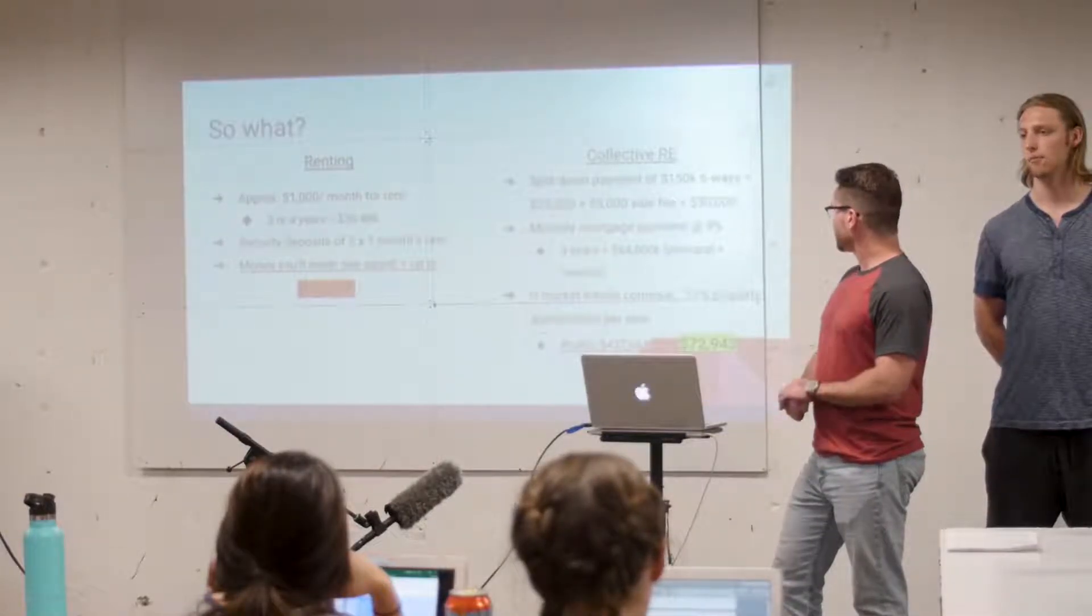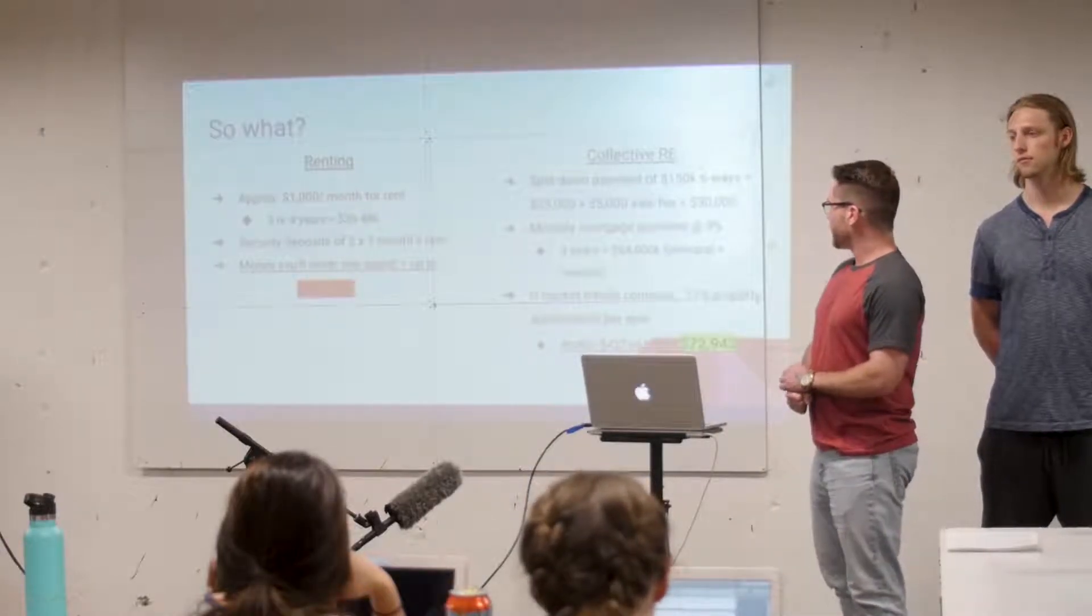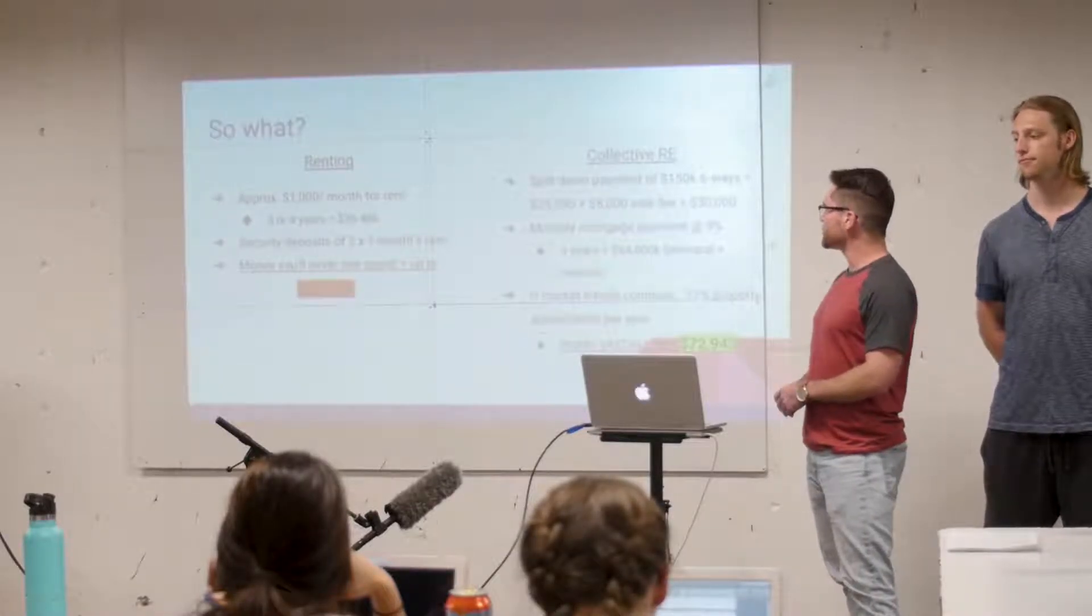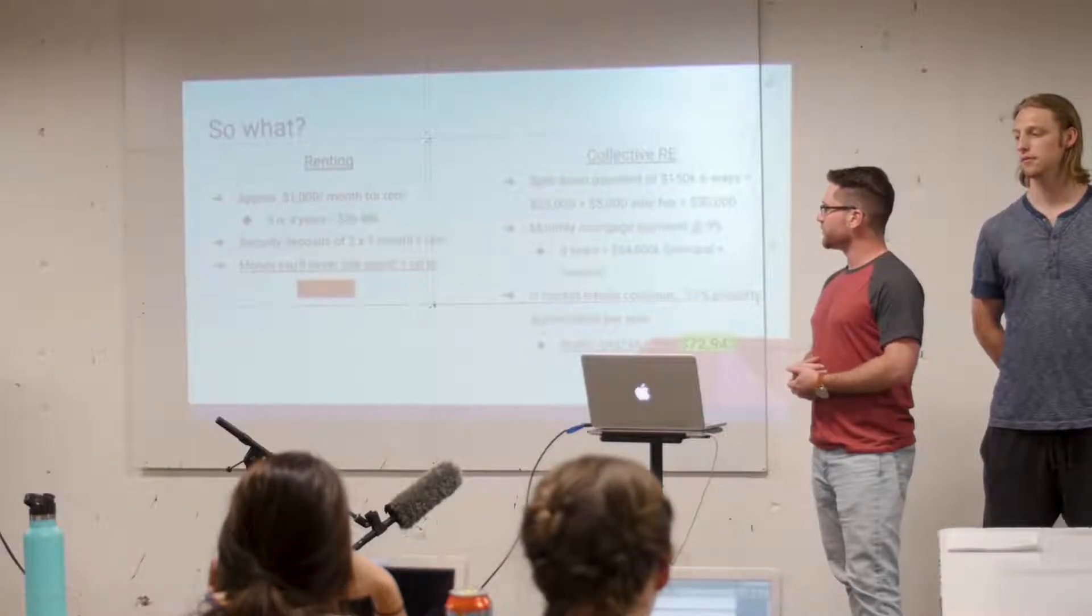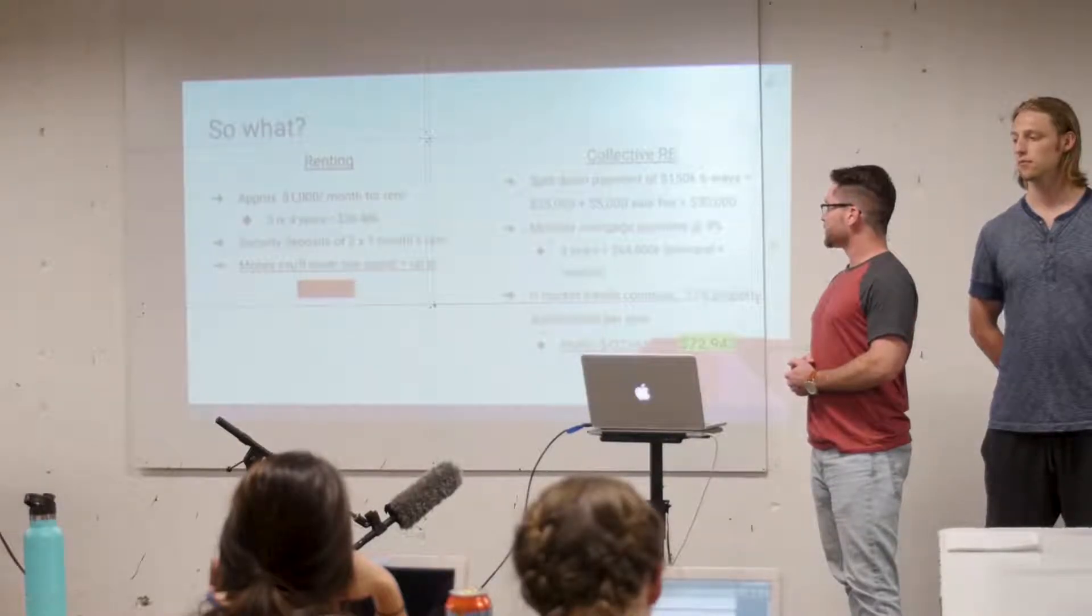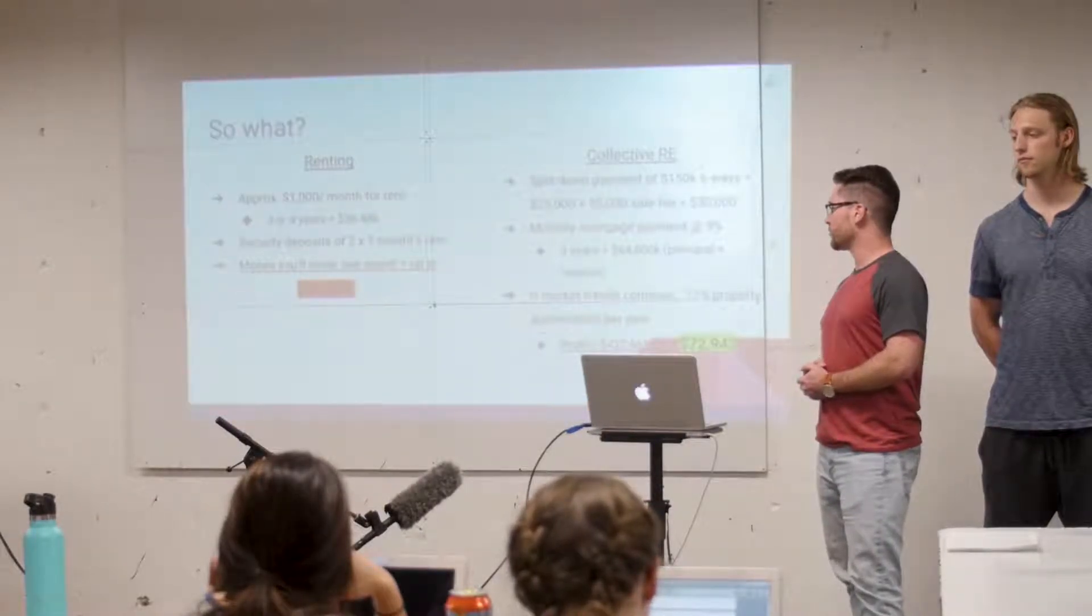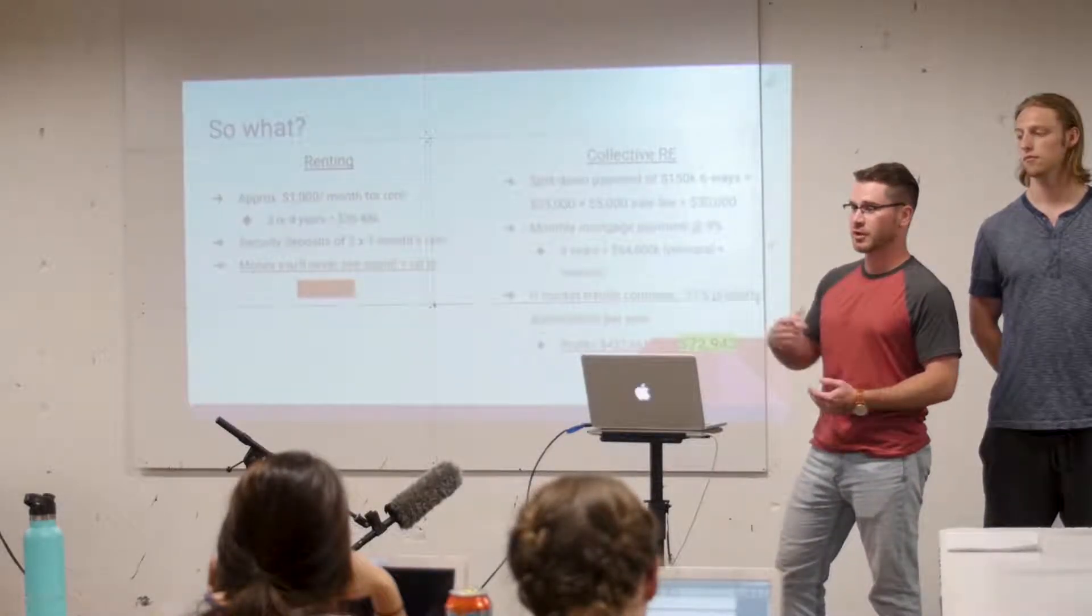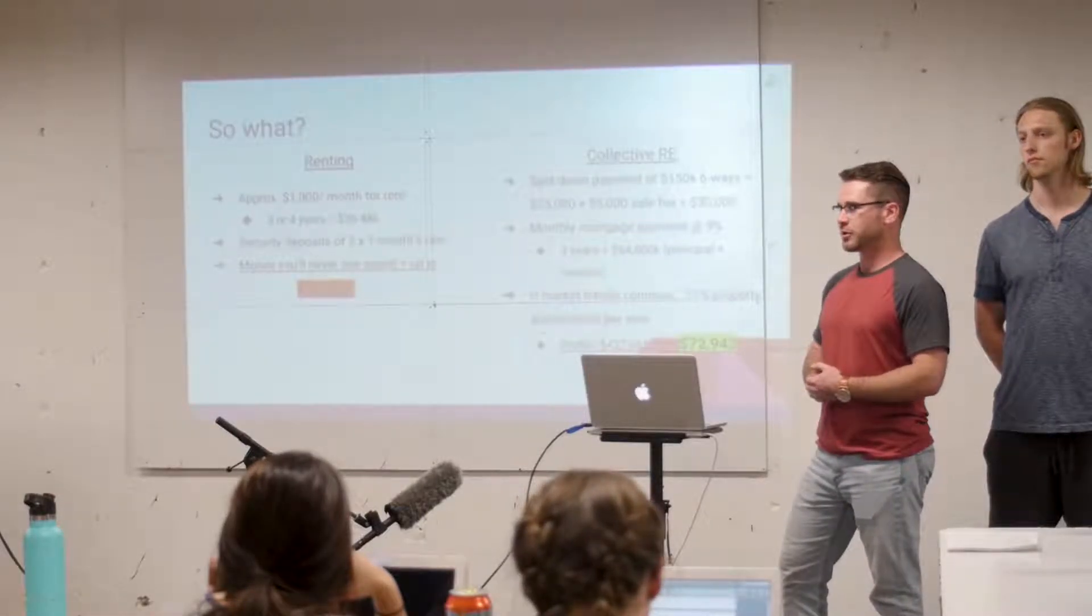Now looking at our business model and how you can actually gain. So you'd have to split the down payment. So we kind of use some round numbers for estimates on a million dollar property, a 15% down payment is $150,000, split that six ways is $25,000. And then we charge a $5,000 sale fee up front. So that's $30,000 in and then your monthly mortgage payment at 9% over four years with principal and interest would be $68,000, that's $64,800 poured into the property.